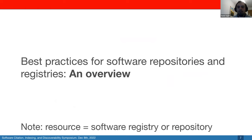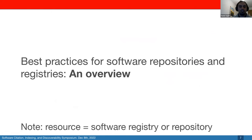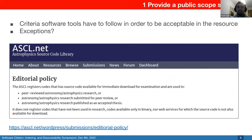I'm going to give you an overview of the practices — note that I'll be referring to software registries and repositories as 'resources.' The first practice is to provide a public scope statement: stating what criteria tools have to meet to be accepted in your resource and listing exceptions. For example, the Astrophysics Source Code Library clearly states that entries accepted are peer-reviewed astronomy software that are part of peer-reviewed astronomy or astrophysics research, submitted for review, or part of someone's thesis.